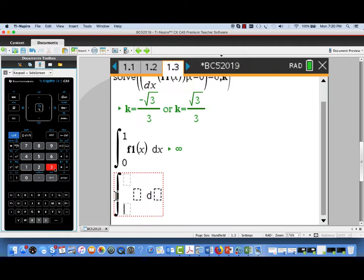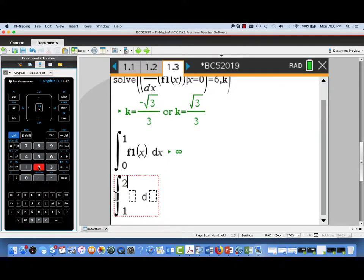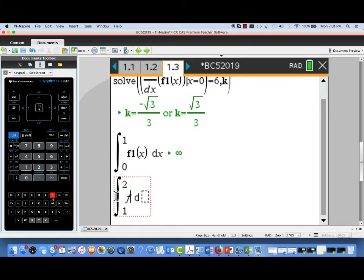One of the pieces is already there, kind of left over from the last problem, though we have updated f1 of x. The other interval we need to consider would be the interval from 1 to 2. Now I'm going to go ahead and set both of these up. So we have both the integral from 0 to 1 and the integral from 1 to 2.